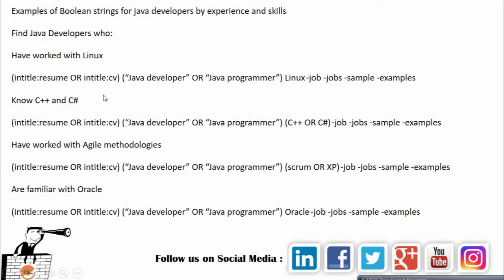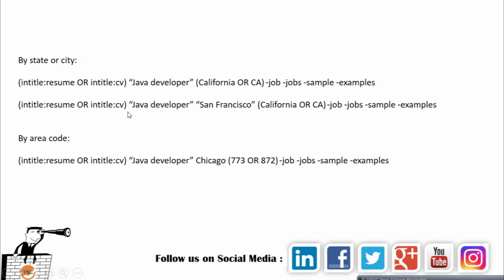You can add more criteria to find profiles that better match your requirements. Java developers can also be found with specific skills or keywords. Someone who has worked with Linux can be added, and C++ or C# can be included using OR in brackets. For methodologies, you can use agile OR scrum OR XP. If you're looking for someone with Java development who is familiar with Oracle, you can add oracle and then minus job, sample, and examples.